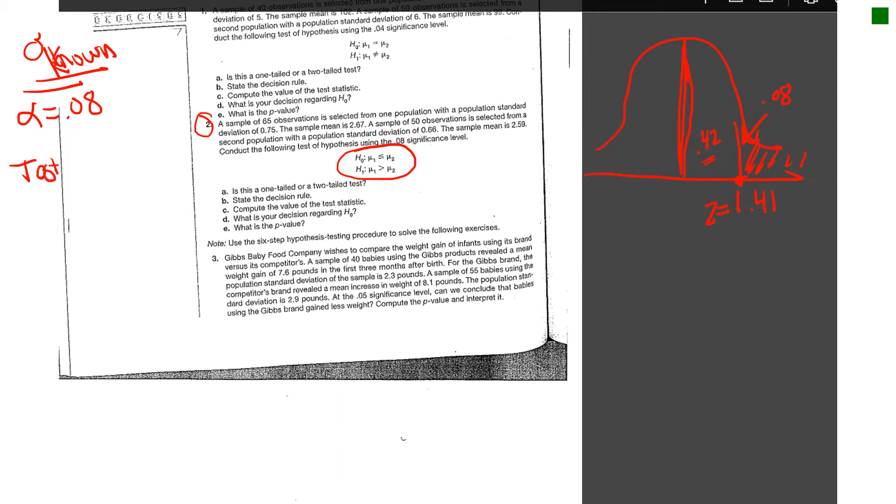To actually get the test statistic, let me plug it into this formula—your sigma-known formula for two samples where the population standard deviation is known. You take 2.67, which is the sample mean for population 1, minus 2.59 for the numerator, divided by 0.75 squared divided by 65, plus 0.66 squared divided by 50.